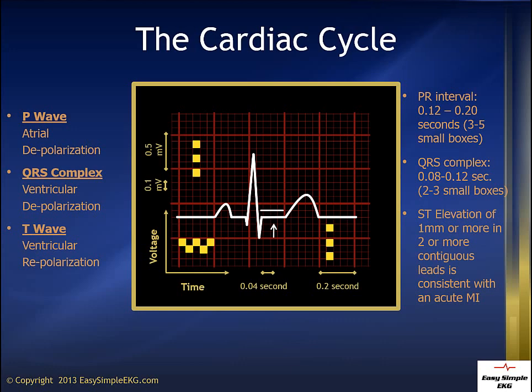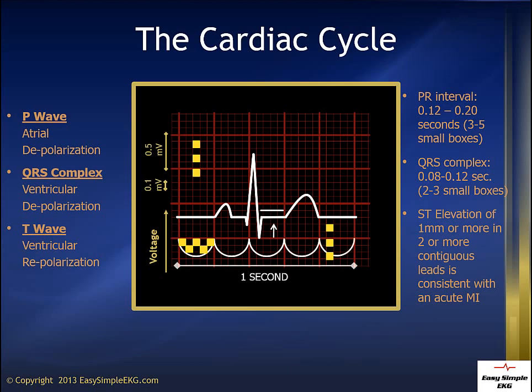As we look across the EKG paper, we see that 5 small boxes make up a large box, and 5 large boxes equal 1 second of time. So when we look at a standard 12-lead EKG, we find that it is actually a 10-second rhythm strip.